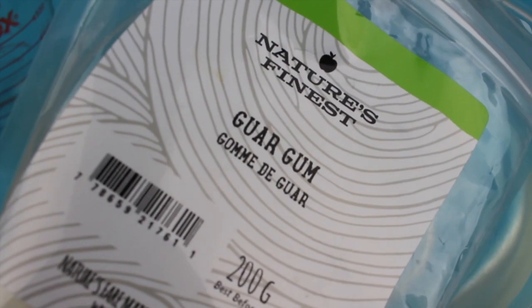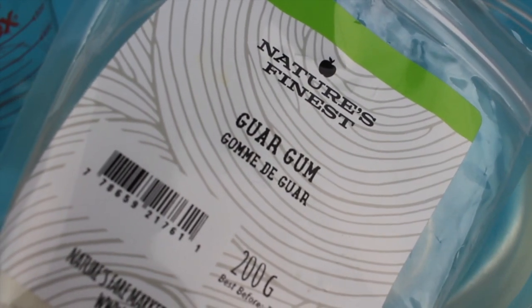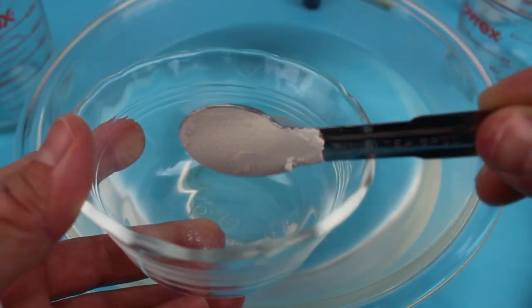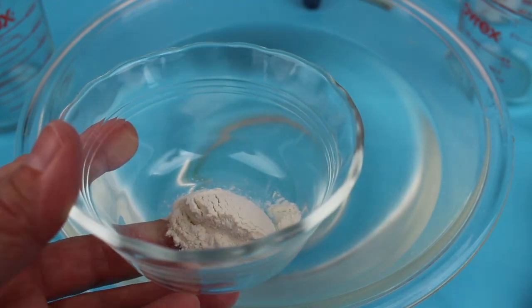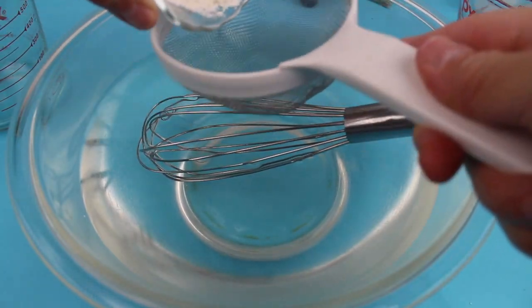Now let's use 3 and 3 quarters of a teaspoon of guar gum. Add slowly to the mixture.